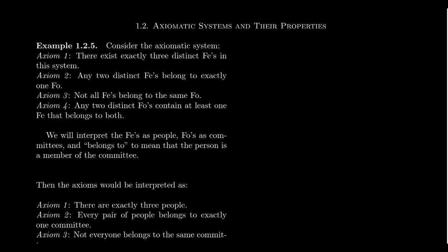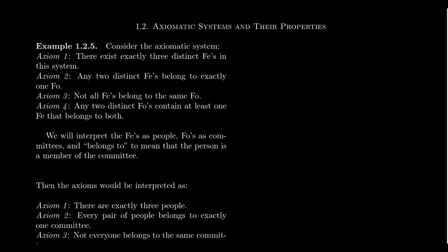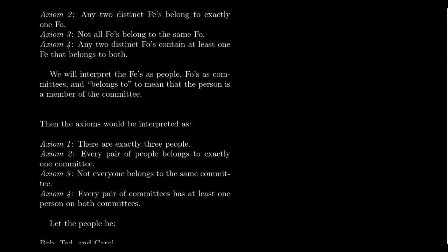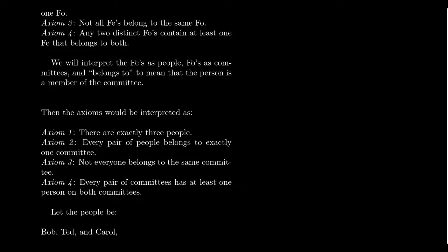What we want to do now is give some interpretation to fee-foe theory. Fees and foes at the moment don't mean anything to us — that's why they're called fees and foes, intentionally with no intuition. We're going to interpret the word fee as people and the word foe as committees. Imagine people working in an office with committees formed to make decisions. The relation 'belongs to' will then mean that the person is a member of that committee. With this interpretation, axiom one would say there are exactly three people.